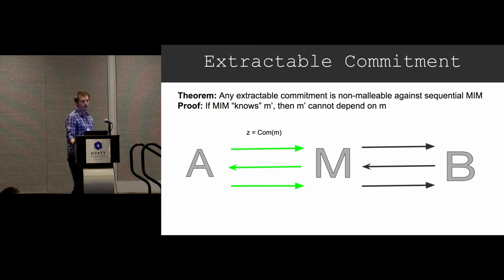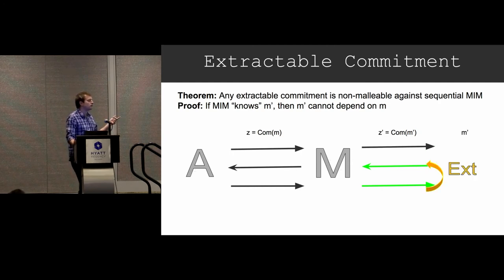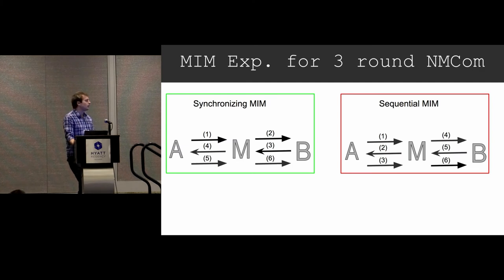To be formal, you would build a reduction: get a commitment to either zero or one from outside, spawn a copy of the man-in-the-middle, run the right execution, get some Z prime, extract M prime, and then use the non-malleable distinguisher to break hiding.